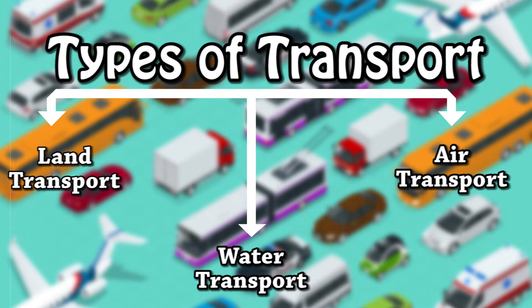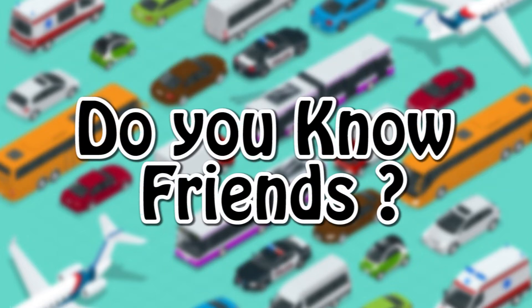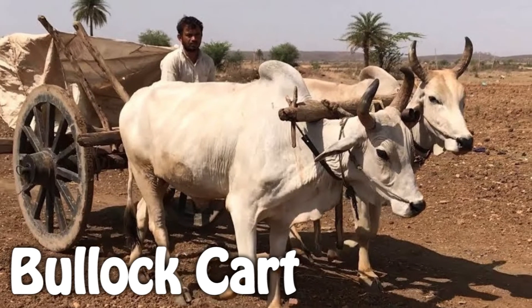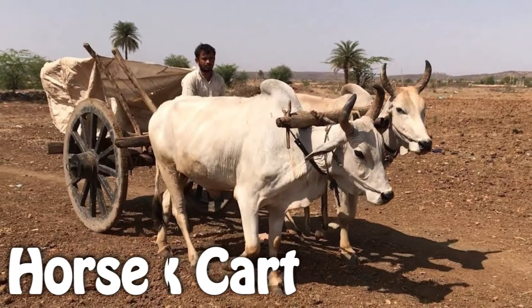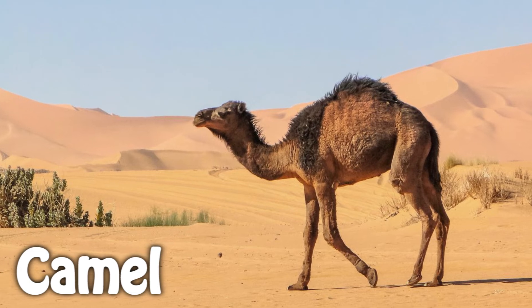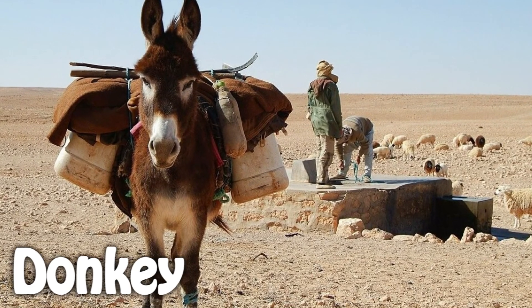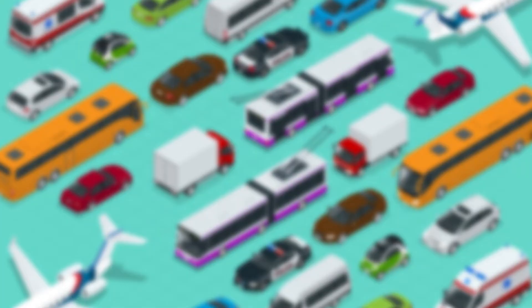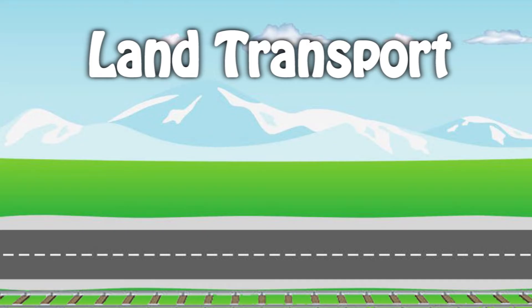But do you know, friends, in olden days animals were used as means of transport, like bullock cart, horse cart, and camel in the desert. Donkey was also used to carry goods.